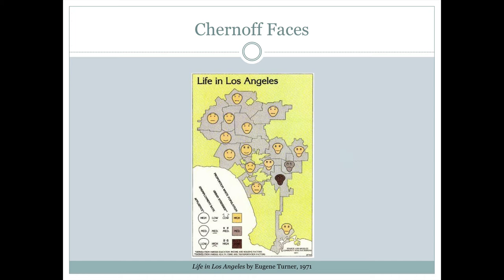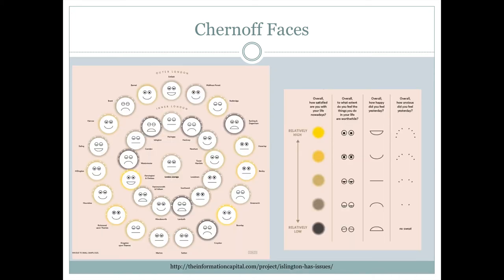A similar map of Chernoff faces was recently made for London. This one's interesting because it's almost more like a graphic — these various places in London are not meant to represent exactly where they are in London, but there are concentric circles showing how far they are from the London average in the middle. How satisfied they are is represented by a little halo around them. That halo also has some little drops of sweat coming out in certain areas, depending on how anxious they felt that day.